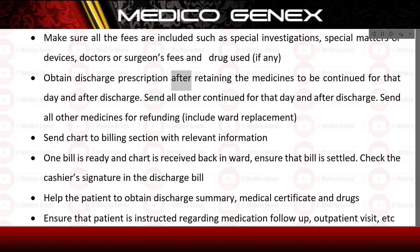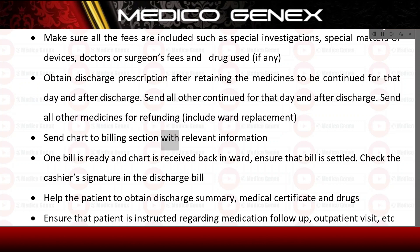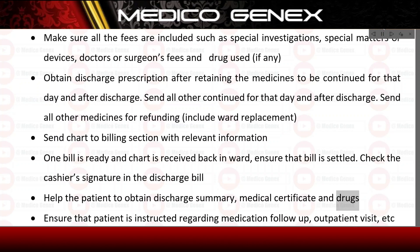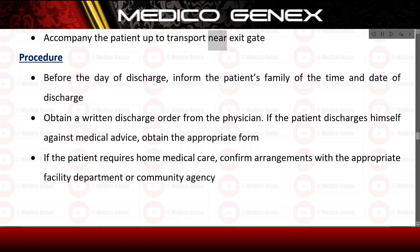Obtain the discharge prescription after retaining medicines to be continued for that day and after discharge. Send all other medicines for refunding including ward replacement. Send the chart to the billing section with relevant information. Once the bill is ready and the chart is received back in the ward, ensure the bill is settled and check the cashier's signature. Help the patient obtain the discharge summary, medical certificate, and drugs. Ensure the patient is instructed regarding medication, follow-up, and outpatient visits. Accompany the patient to the transport near the exit gate.